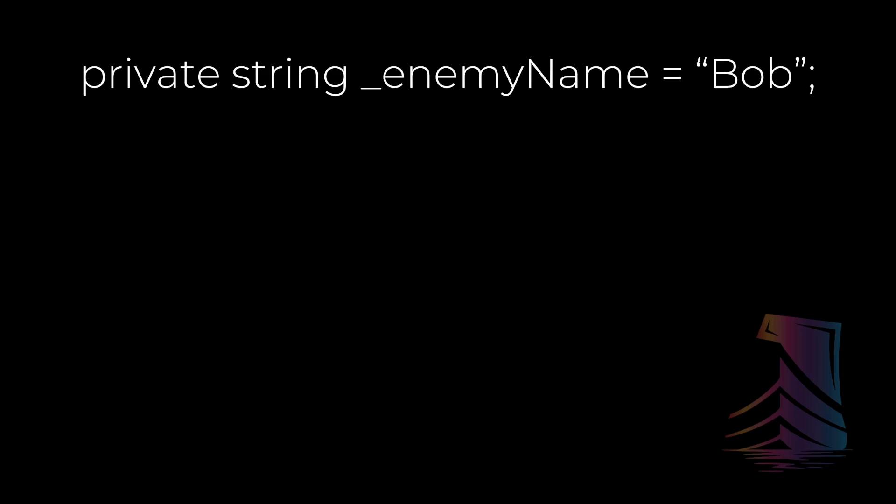Properties come in a few different forms, so let's learn by doing. Let's imagine we have a string variable called enemyName that belongs to an enemy class. At the moment it's private, like we learned it should be. But something like this variable isn't likely to be of any use to the enemy class itself — it's probably only useful to outside classes. So we can make a property that looks like this.